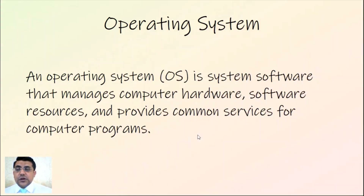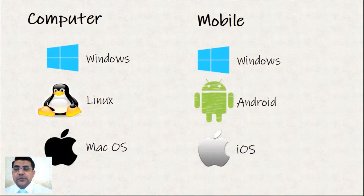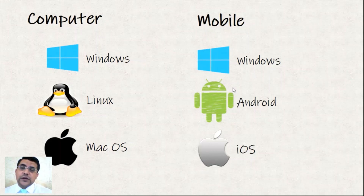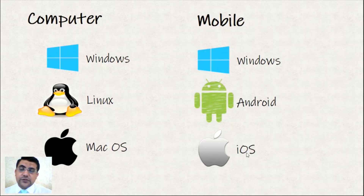An operating system (OS) is system software that manages computer hardware, software resources, and provides common services. The common examples for computers are Windows and Linux. For mobile devices we have Windows and Android — Android is the most famous and popular mobile OS. macOS is for Apple systems and iOS is for iPhone devices.